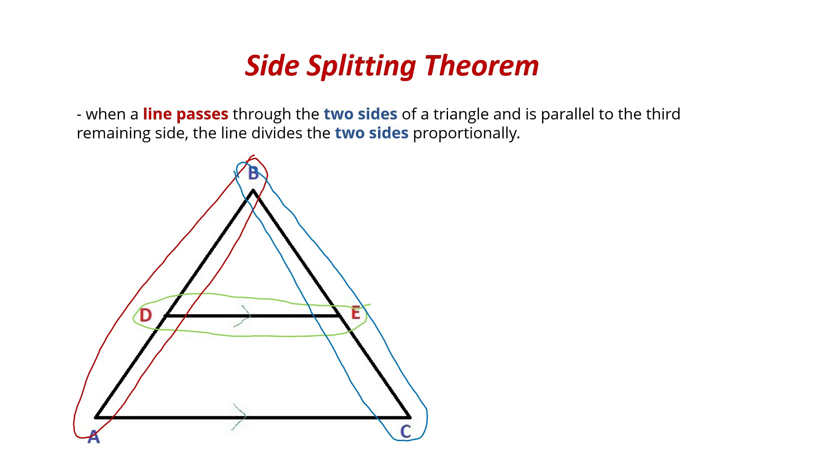And it is parallel to the third remaining line, which is this bottom line down here. And so what that means is the line divides into two sides that are proportional. So the side circled in red is proportional to the side that I circled in blue. And remember, proportional means they will have the same ratio.